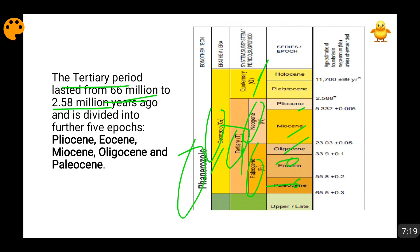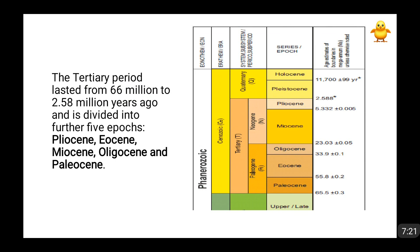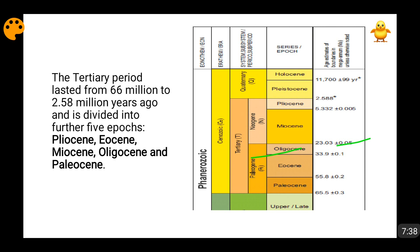The Pliocene lies from 2.588 to 5.332 million years ago. Then comes Miocene, from 5.332 million years ago to 23.03 million years ago. Then Oligocene, from 23.03 million years ago to 33.9 million years ago. Then Eocene, from 33.9 million years ago to 55.8 million years ago. And then Paleocene, from 55.8 million years ago to 65.5 million years ago. That was the complete breakup of the Tertiary Period.